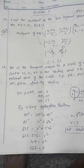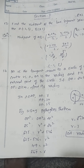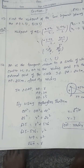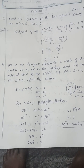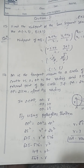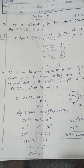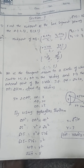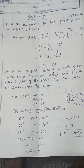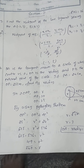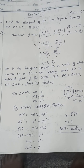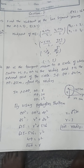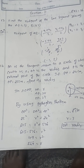Section 2, 2-mark questions. Find the midpoint of the line segment joining the points A(2, -3) and B(0, 7). The midpoint formula is ((x1+x2)/2, (y1+y2)/2). Here x1 = 2, y1 = -3, x2 = 0, y2 = 7. So the midpoint of AB is (1, 2).